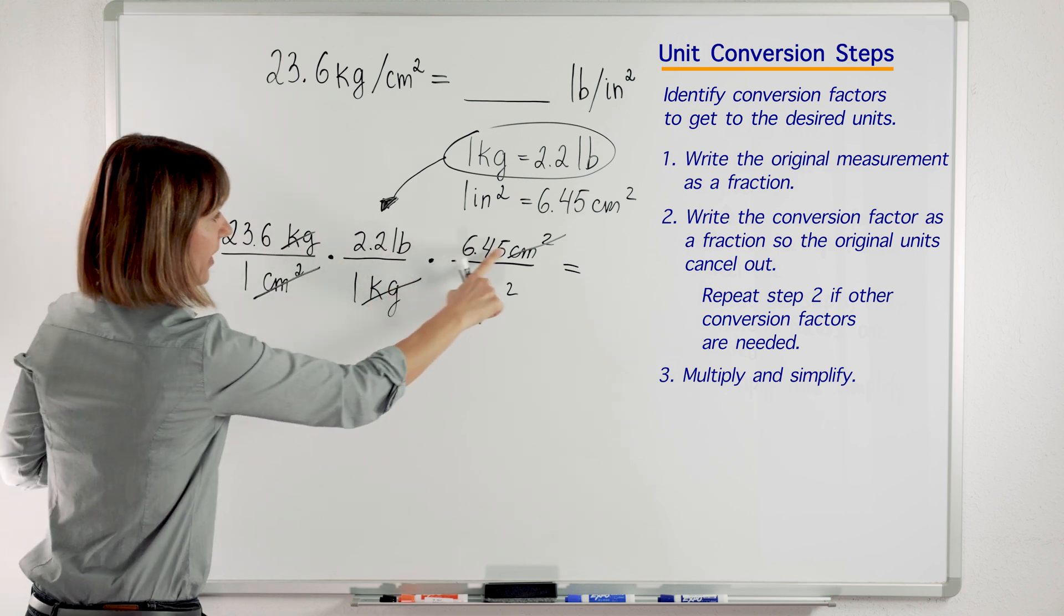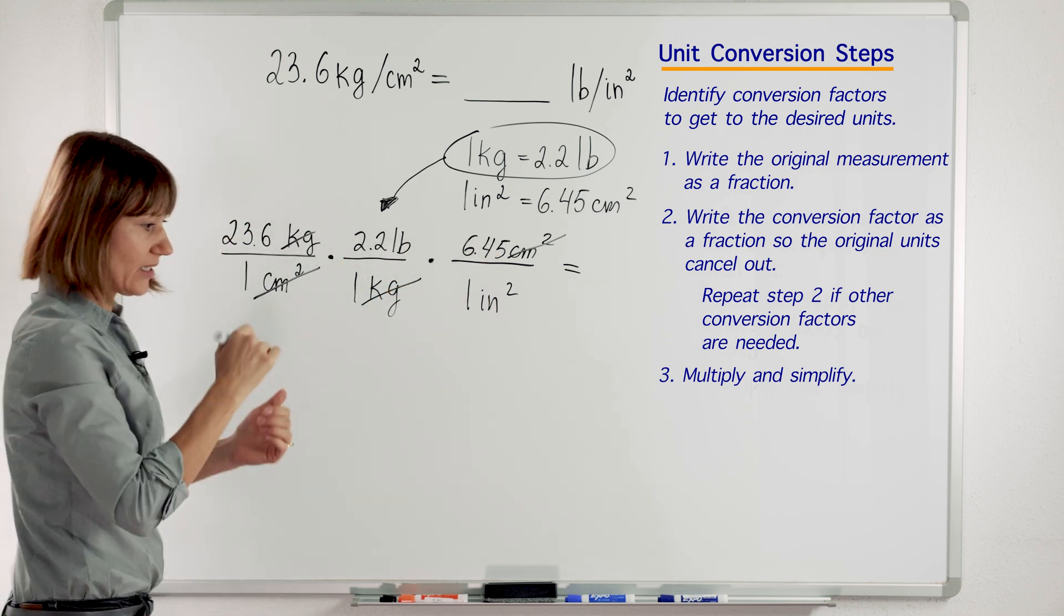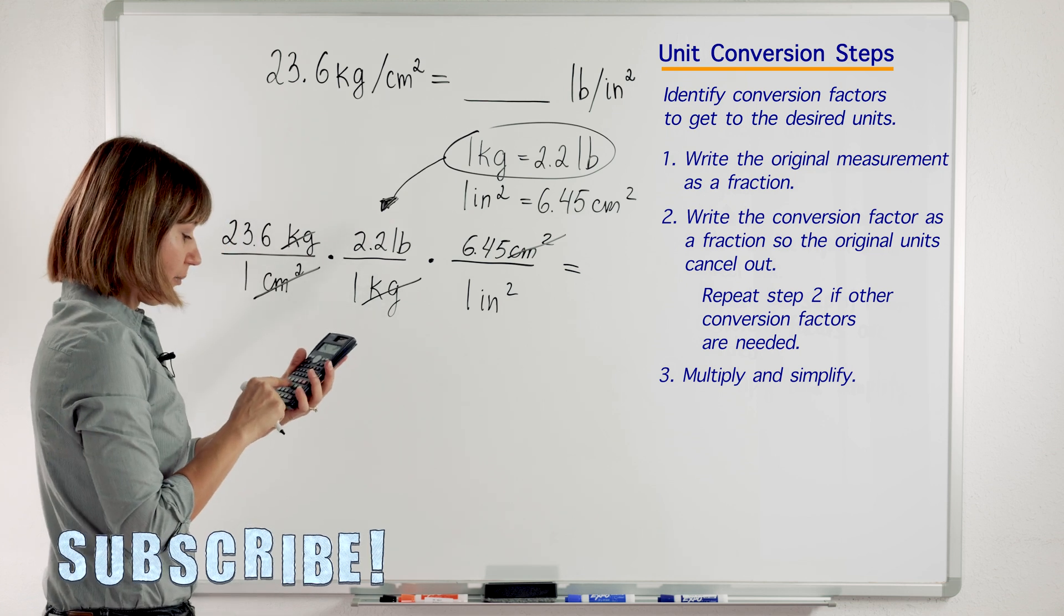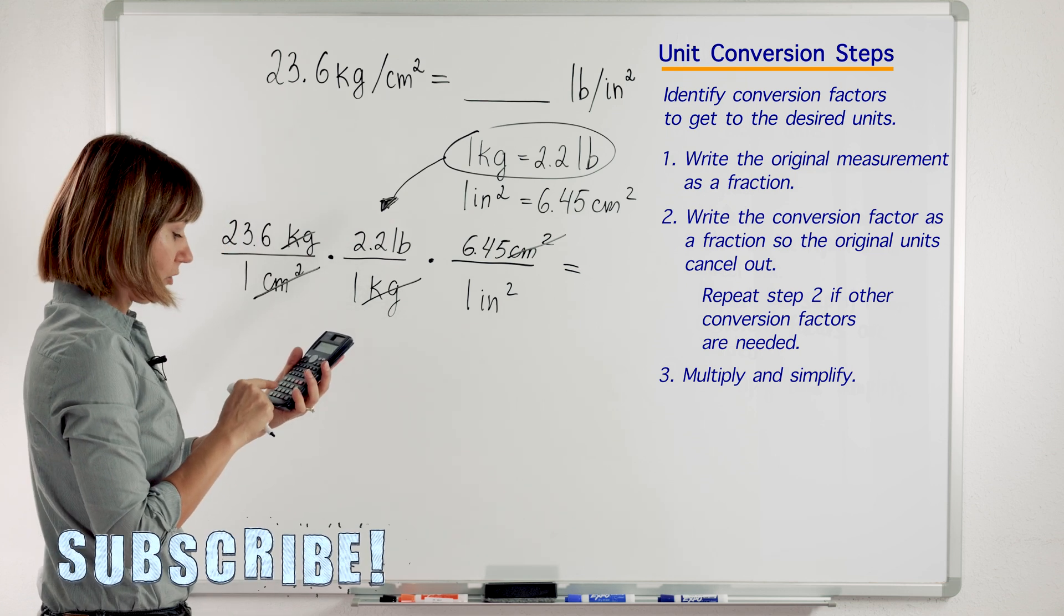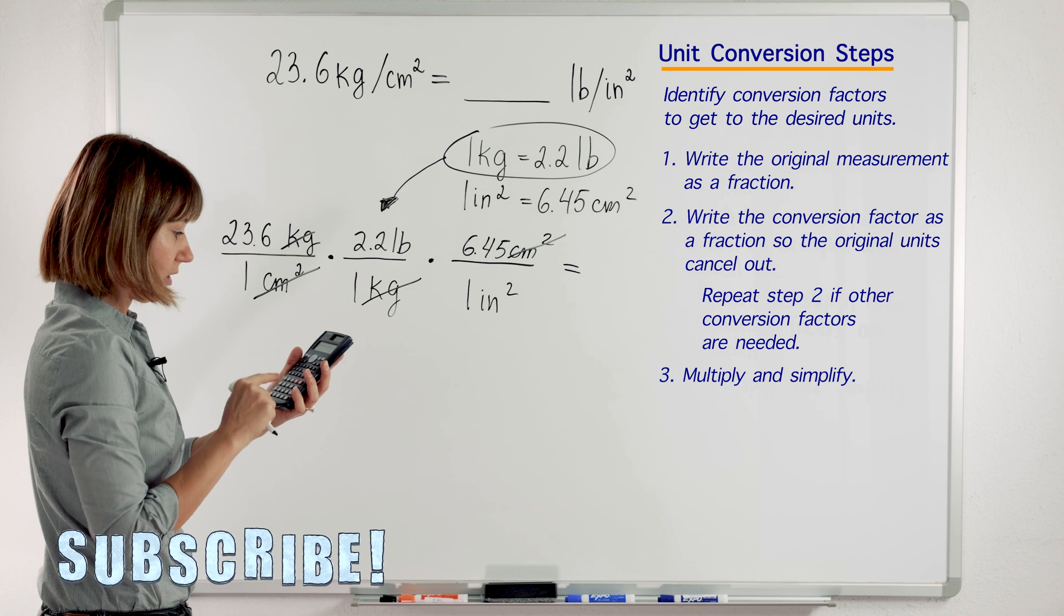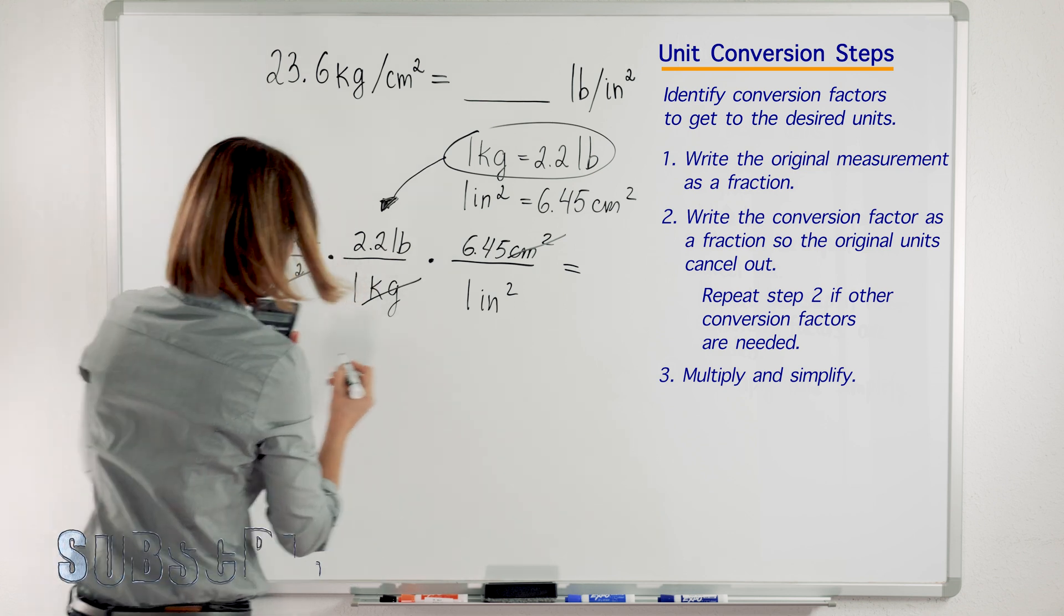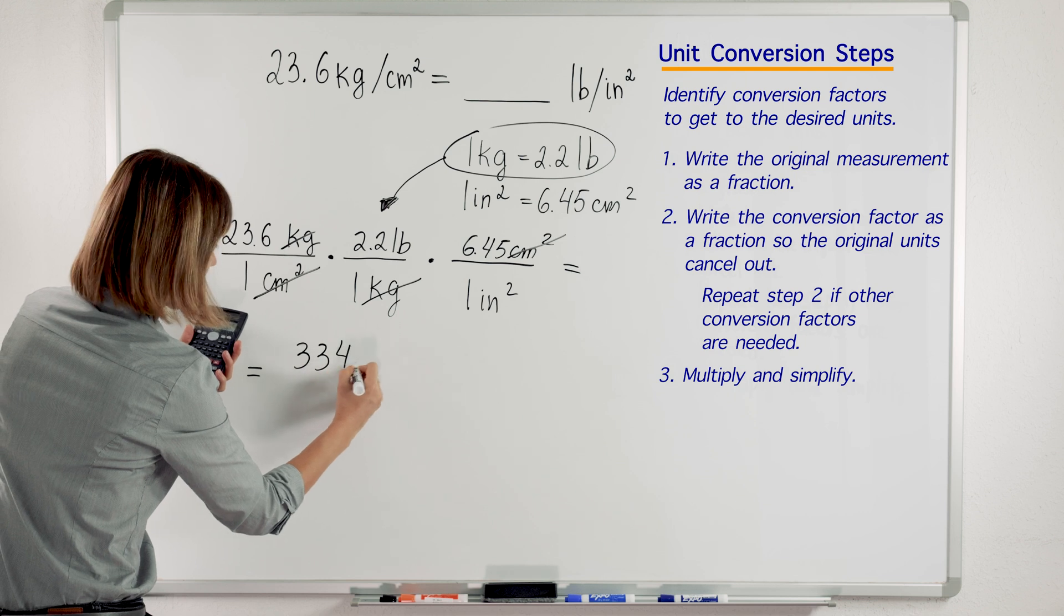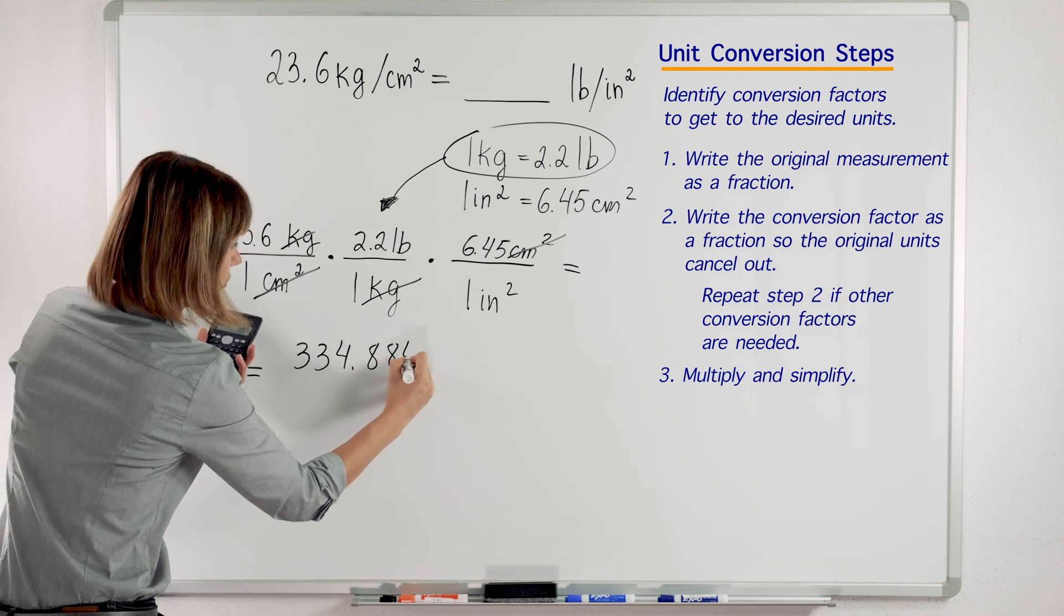We are going to multiply our numerators. Let's get the calculator and multiply. So 23.6 times 2.2 times 6.45. I got, let's write it here.